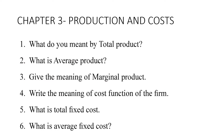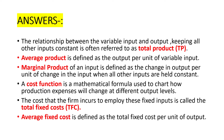Now, third chapter — production and cost. All of these questions are from your question bank. The first question is: what do you mean by total product? The relationship between the variable input and output, keeping all other inputs constant, is referred to as total product.